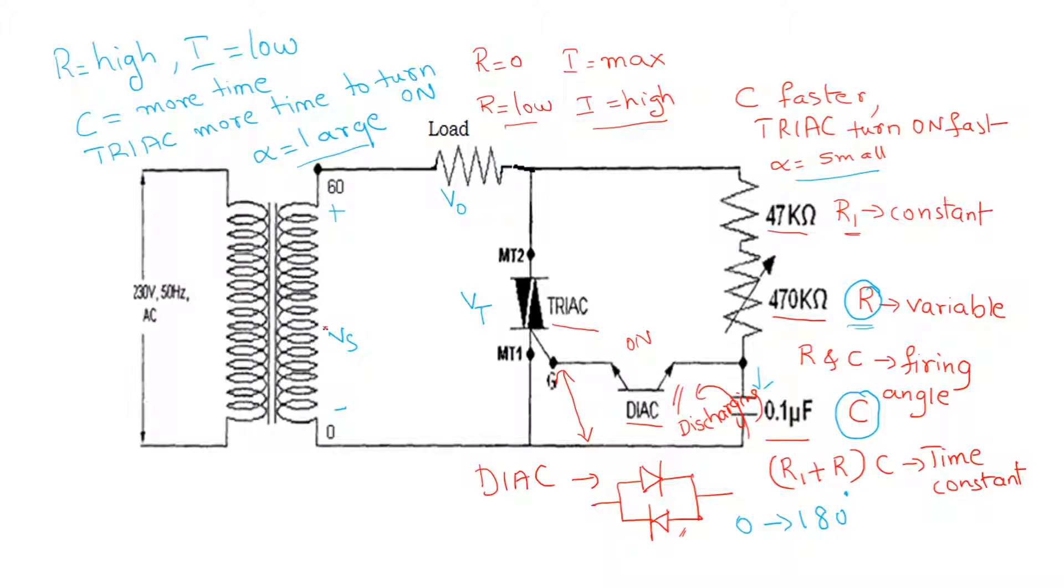During the positive half cycle of the input, the secondary terminal of the transformer has polarity as indicated here. If the TRIAC has been triggered and is conducting, the current flows through the load in this manner. What is the voltage across the TRIAC if the TRIAC is on?